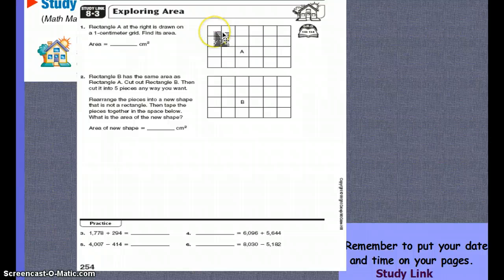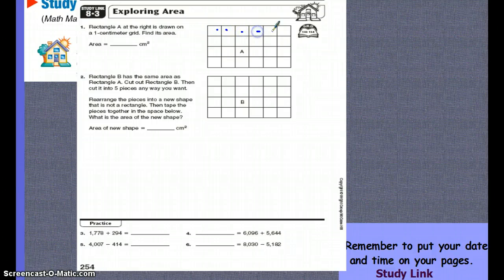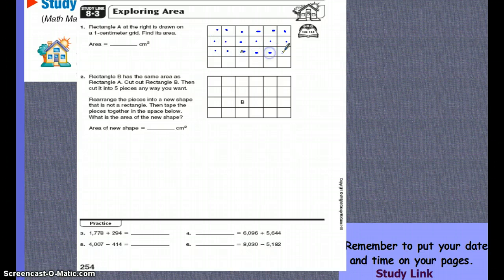If you count, you're counting one, two, three, four, five, six, seven, eight, nine, ten, eleven, twelve, thirteen, fourteen, fifteen, sixteen, seventeen, eighteen, nineteen, twenty, twenty-one, twenty-two, twenty-three, twenty-four. You can count them.